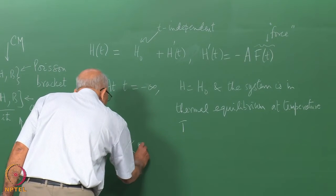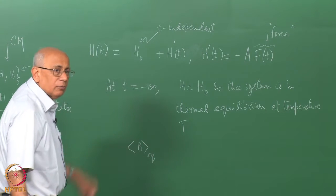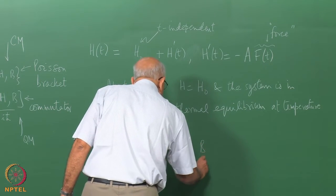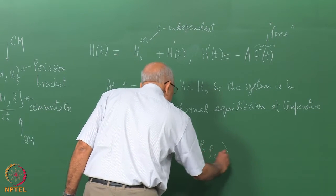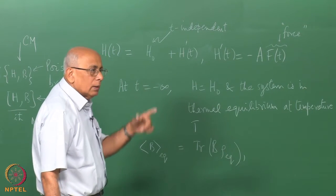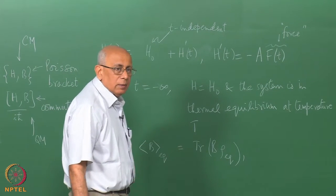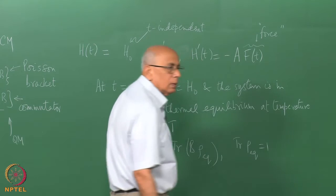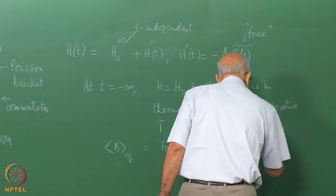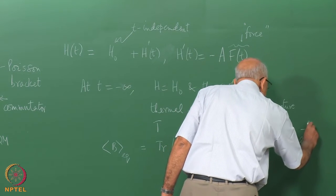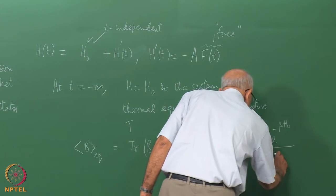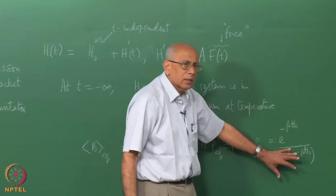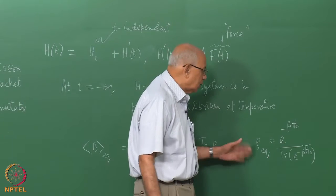The system's physical quantities — the average values — are all specified by a thermal average with respect to the density operator of the canonical ensemble. For instance, the equilibrium average of B equals trace(B · ρ_eq), where we normalize so that trace(ρ_eq) = 1. The equilibrium density operator is ρ_eq = e^{-βH₀} divided by trace(e^{-βH₀}); the denominator is a scalar normalization factor.